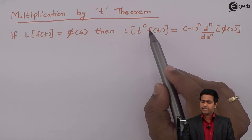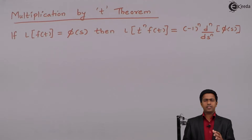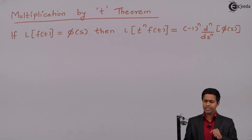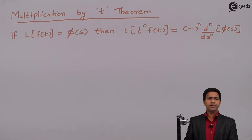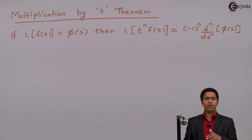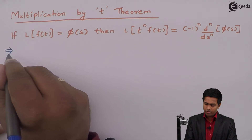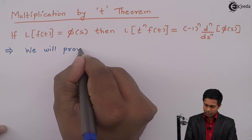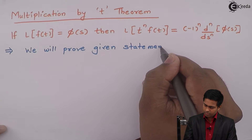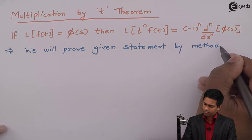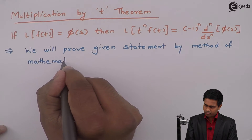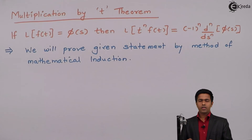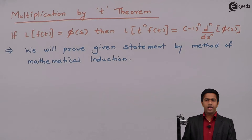We need to prove this theorem is true for all natural numbers. We will use the method of mathematical induction, which is used to prove any statement for all natural numbers. This is a two-step process: the first step is called the base case and the second step is called the inductive step.